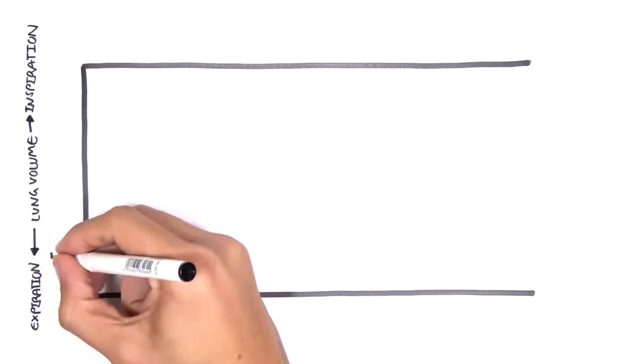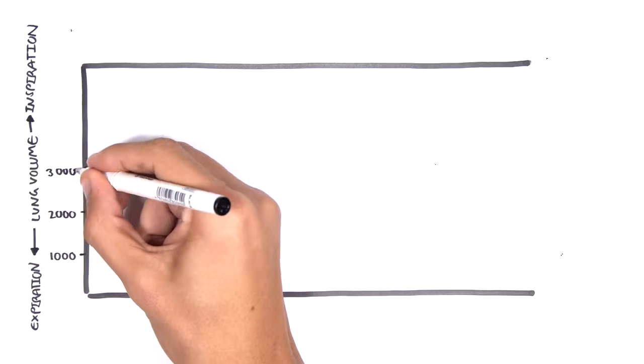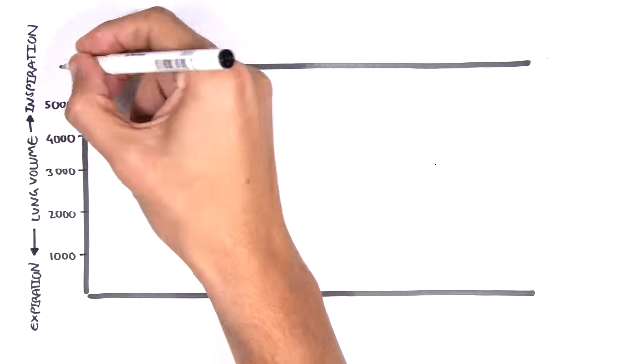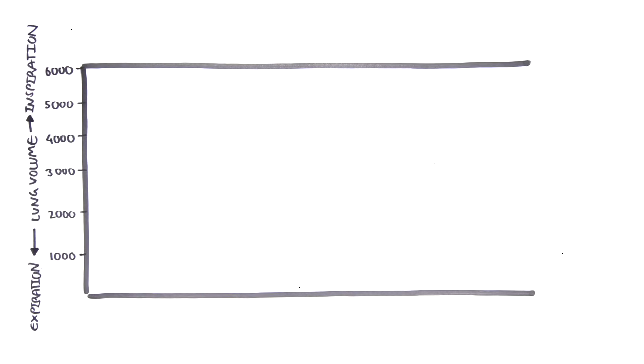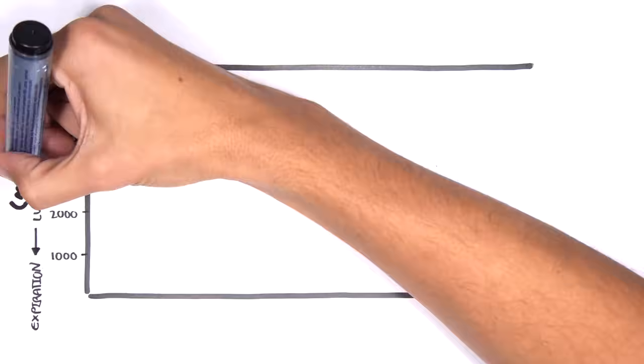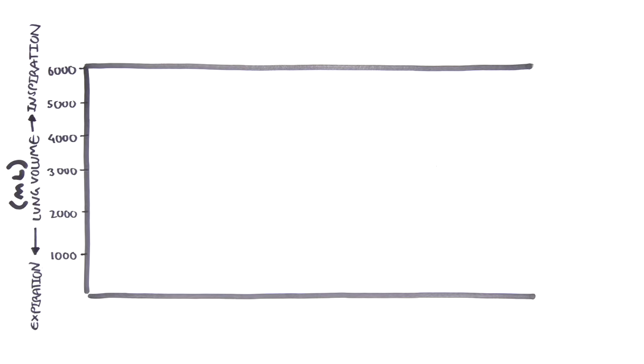So let's draw it out. Going up here is when we inspire, so inspiration, and increase our lung volume, obviously. And going down the y-axis is when we exhale air, so we are decreasing our lung volume, which kind of makes sense. The x-axis is just time, nothing really specific. So let's now first recap our four important lung volumes.